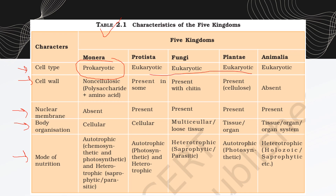For cell wall: Monera has a non-cellulose cell wall; in Protista it may be present or absent; Fungi have chitin in their cell walls; Plants have a cellulose cell wall; and Animals have no cell wall.